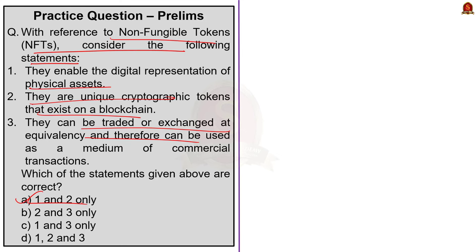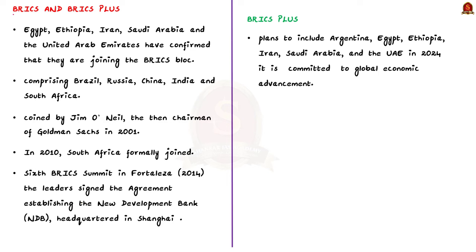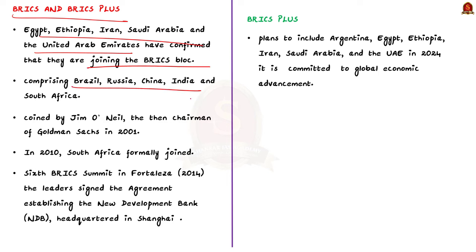Our next topic is BRICS. Since new members have been added to this grouping, it becomes very important for prelims 2024. Recently Egypt, Ethiopia, Iran, Saudi Arabia, and United Arab Emirates have confirmed that they are joining the BRICS block. BRICS is an acronym for the grouping of the world's leading and emerging economies: Brazil, Russia, India, China, and South Africa. The term BRICS was coined by Jim O'Neill, then chairman of Goldman Sachs, in 2001. The first BRICS summit took place in 2009 in Yekaterinburg, Russia. In 2010, South Africa formally joined, making it BRICS.